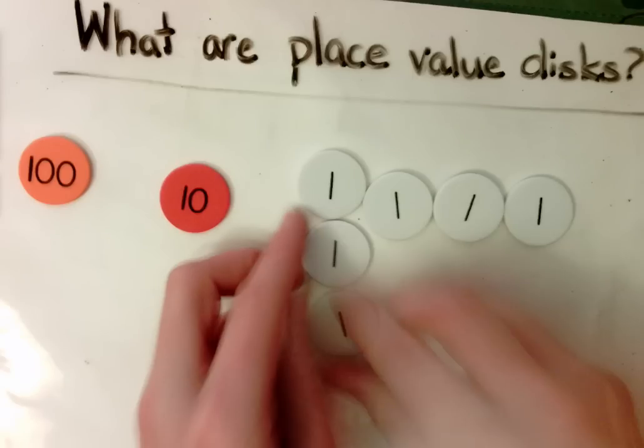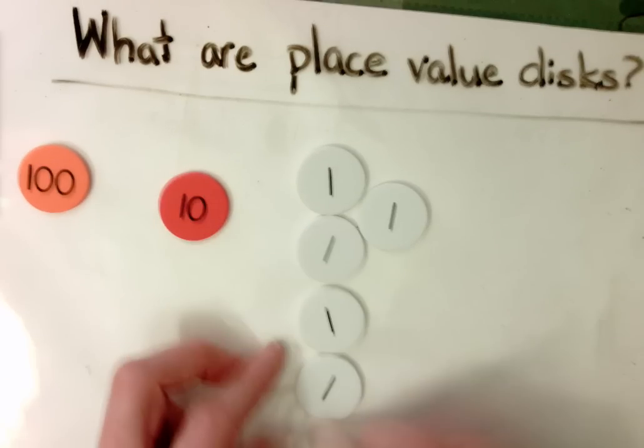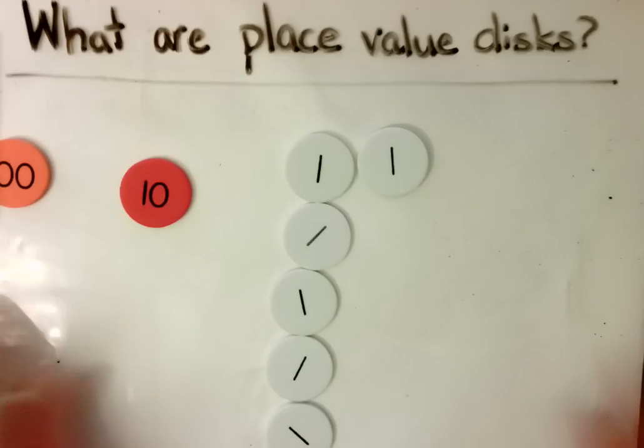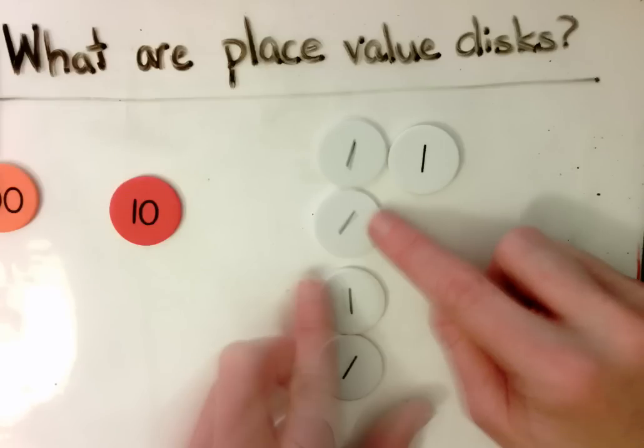I can also line up these same chips vertically and I still have one hundred, a value of one hundred and sixteen.